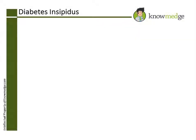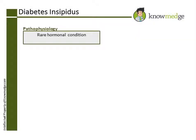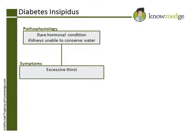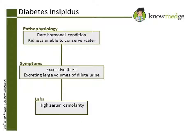Diabetes insipidus is a rare hormonal condition in which the kidneys are unable to conserve water, characterized by the patient feeling excessive thirst and excreting large volumes of dilute urine. The result is high serum osmolarity and low urine osmolarity.